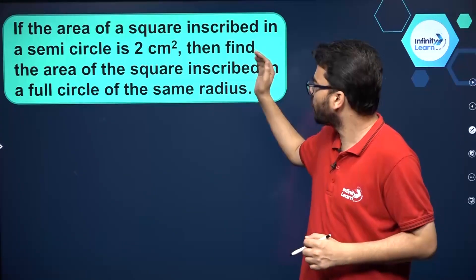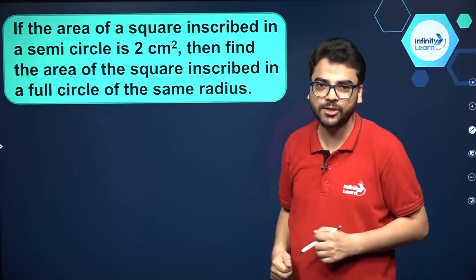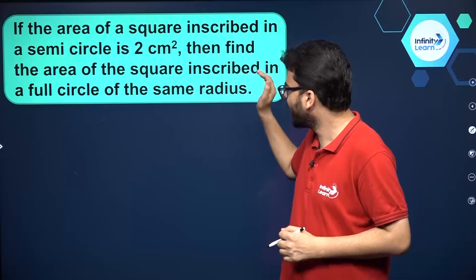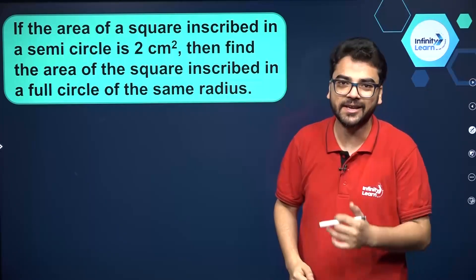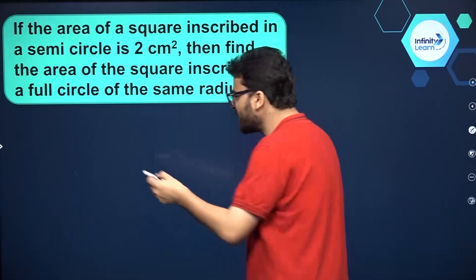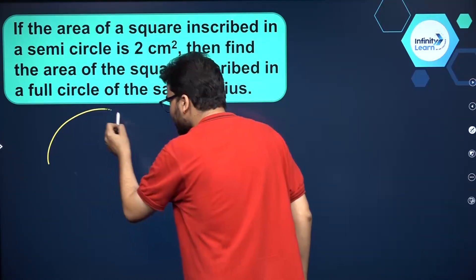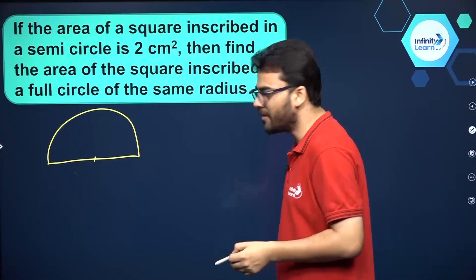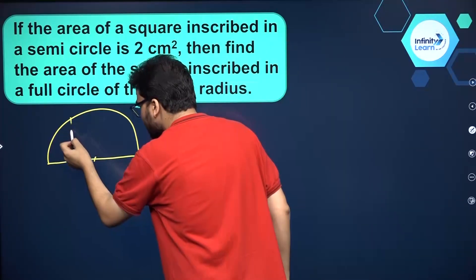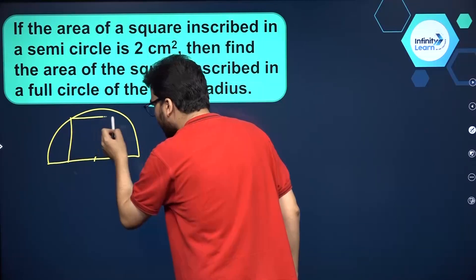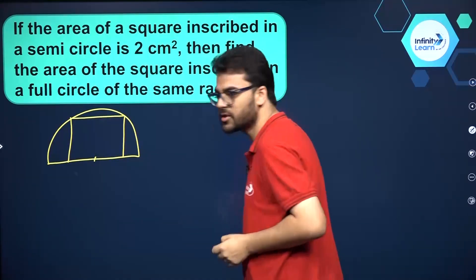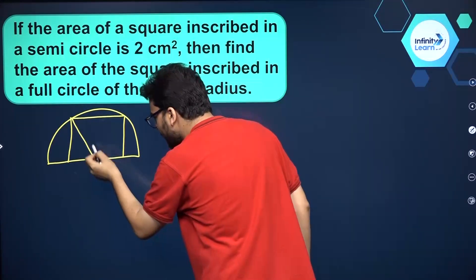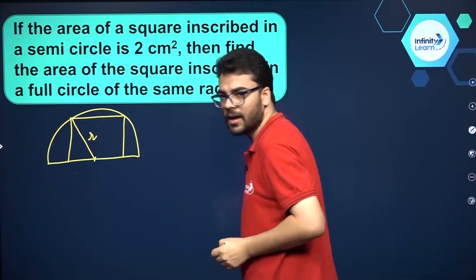We have been given that the area of a square inscribed in a semicircle is 2 centimeter square, then we have to find the area of the square inscribed in a full circle of the same radius. Basically we have been given a semicircle — let's draw it. We are talking about a square inscribed in it, so the square will be somewhat like this. We don't know the radius of the semicircle, so just assume that the radius is equal to r.